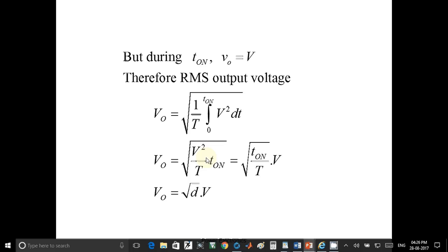This equals V square upon T into T on. In other words, square root of T on upon T into V. So Vrms equals square root of D into V, where D is duty cycle and V is supplied voltage.